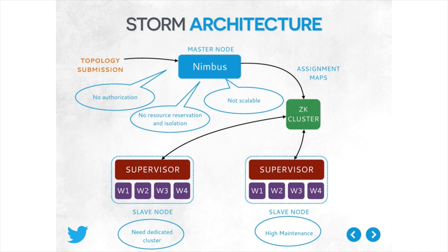This is the architecture of Storm. We have two types of nodes: master node and slave node. The master node runs Nimbus, which monitors the whole cluster, including restarting any failed nodes. Nimbus is also responsible for assigning tasks to executors. The slave node runs the supervisor and the real work tasks we call workers. The supervisor is responsible for restarting any failed workers and other monitoring cases.